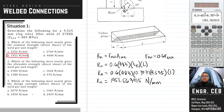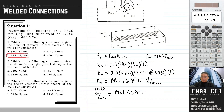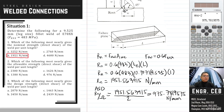Problem 2: Which of the following most nearly gives the allowable strength of the weld per unit length? We already have the nominal strength. The allowable strength uses allowable strength design (ASD), which is found by dividing R_N by the factor of safety. The factor of safety for welds is 2. Therefore, 1951.563915 divided by 2 equals 975.7819575 N per mm, and the answer is letter D.